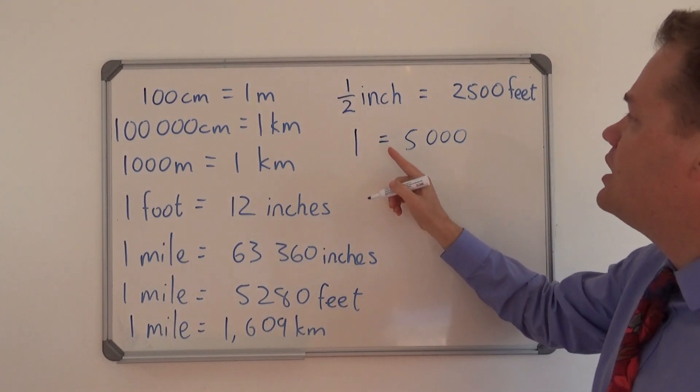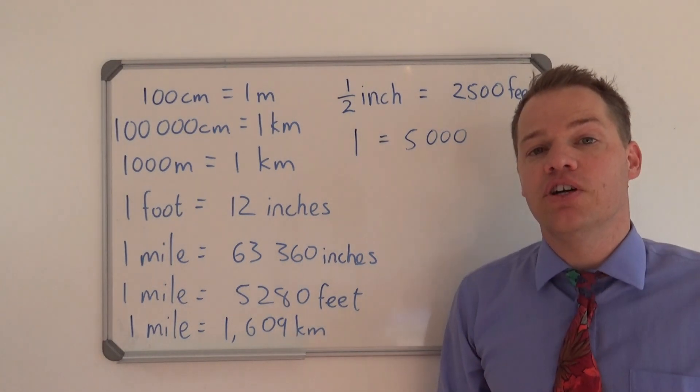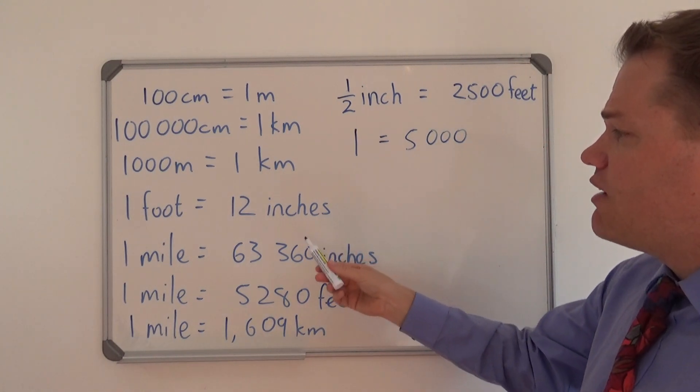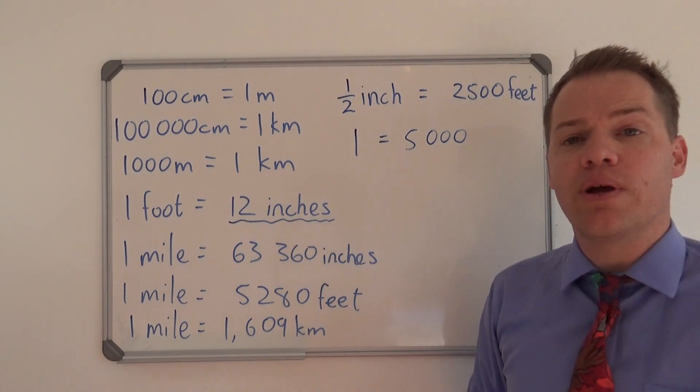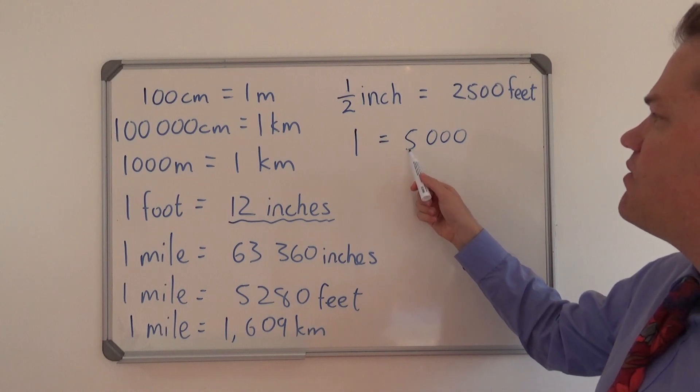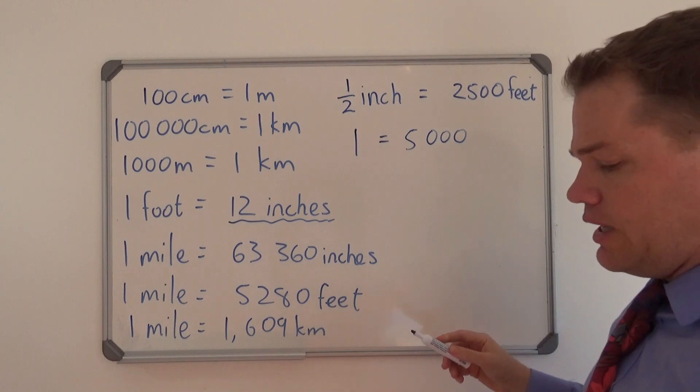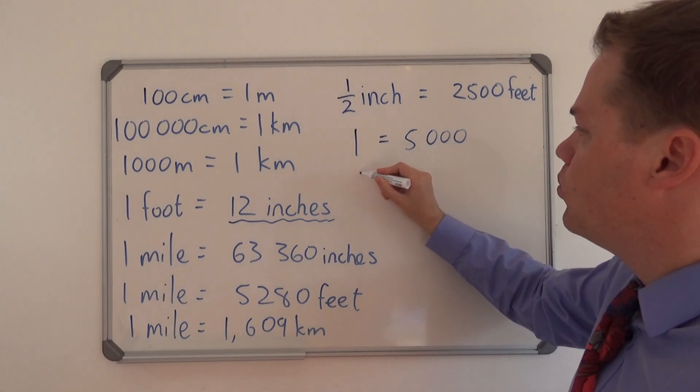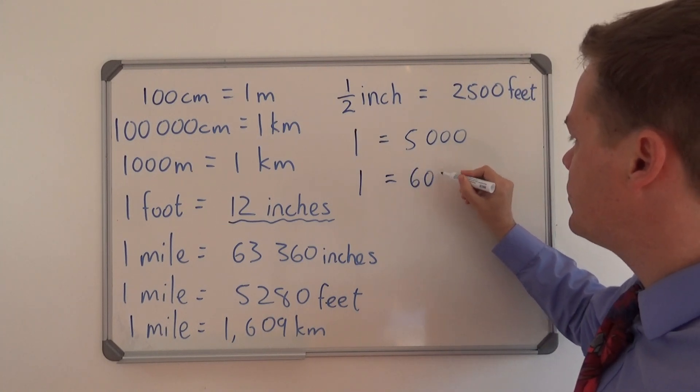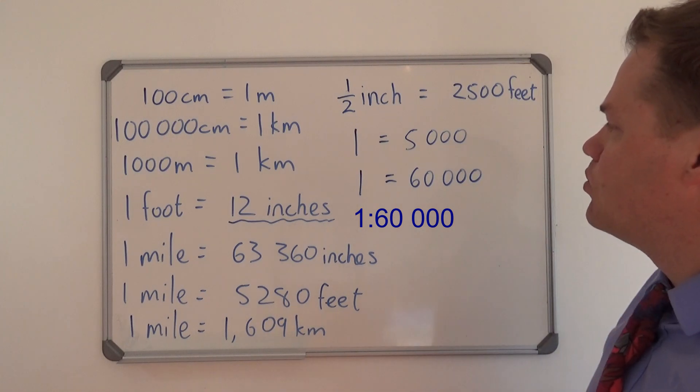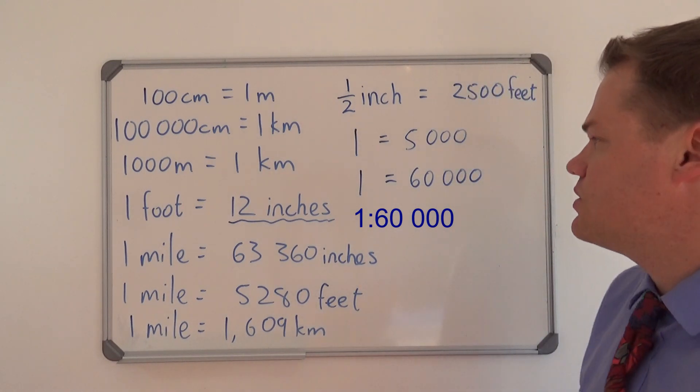So we have 1 inch equals 5,000 feet, and this is where we are going to convert feet to inches. What do we have on this side? We have 12 inches in 1 foot. So we can do a quick calculation. We are going to say 5,000 times 12, because there's 12 inches in a foot, and the answer is 60,000. So 1 inch is 60,000 inches in real life. If you measure 1 inch on your map, it represents 60,000 inches in real life.